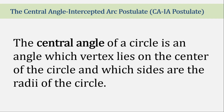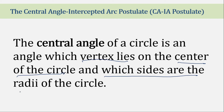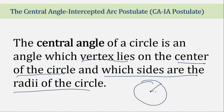A central angle of a circle is an angle whose vertex lies on the center of the circle. The center of the circle is its vertex, and its sides are the radii of the circle. So the vertex is the center of the circle and the legs are the radii of the circle.